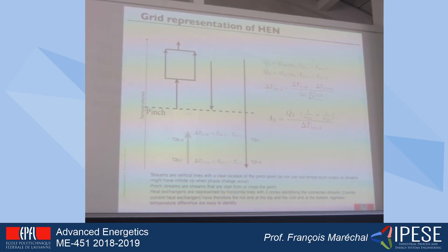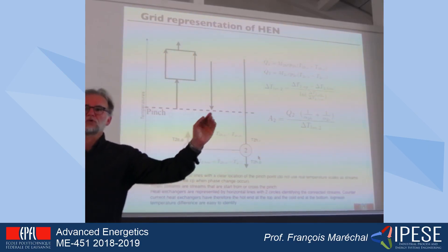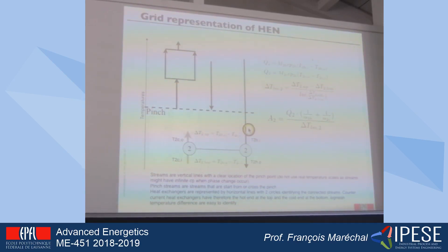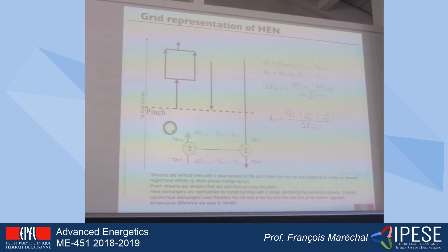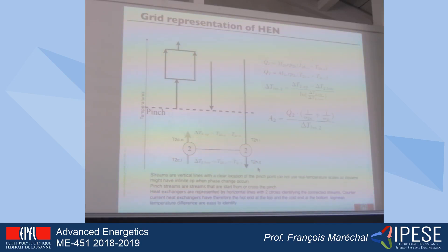When introducing a heat exchange between streams to be heated and cooled, I add a horizontal line linking them — one needing heating and one needing cooling. This gives the counter-current representation: hottest temperatures at one end, coldest at the other. Once temperatures are defined at each end by the energy balance, I can calculate the heat exchange area needed. The energy balance tells me the heat load going from one end to the other on the hot side equals that on the cold side.